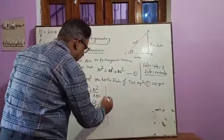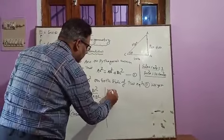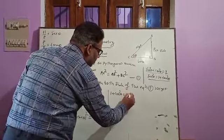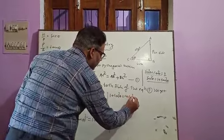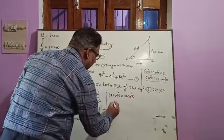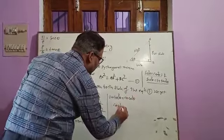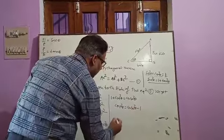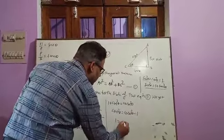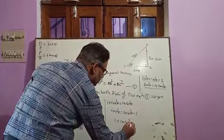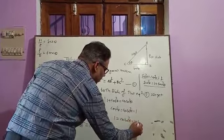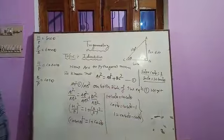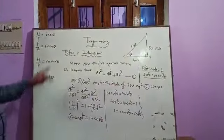We can write this third equation in two other ways: 1 + cot²θ = cosec²θ, and cot²θ = cosec²θ − 1, and 1 = cosec²θ − cot²θ. These equations are used in solving trigonometrical identities.